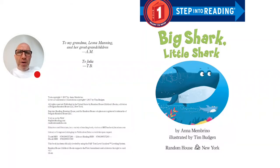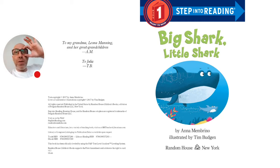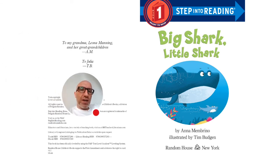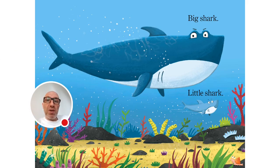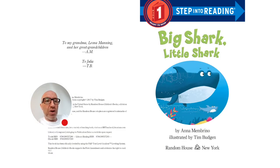Hey up big lad, how's it going? It's Baba here and I'm about to read you a brand new story. The story is called Big Shark Little Shark and it's by Anna Membrino, illustrated by Tim Budgen. Illustrated means the person who did the pictures, so the author, the person who wrote the book, is Anna Membrino.